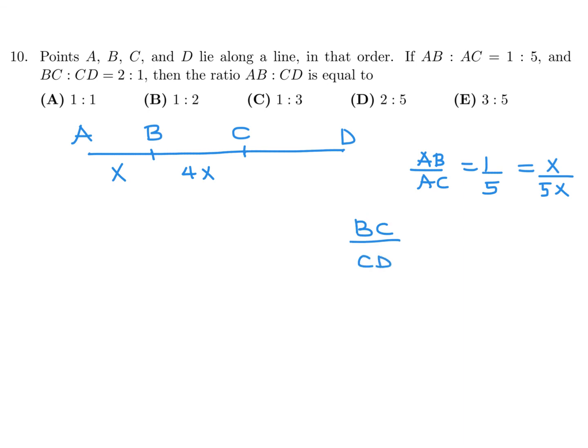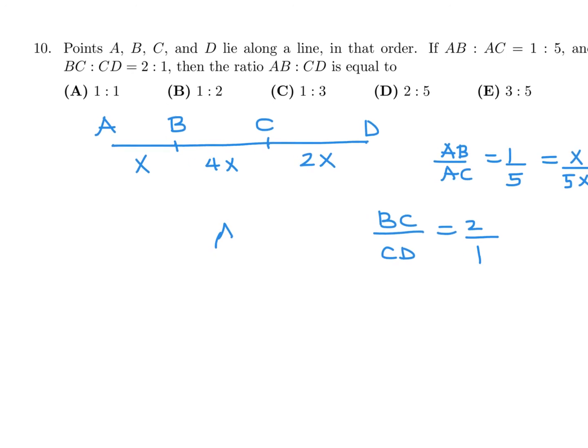CD is half of that, so 2 to 1 means CD would be 2x. Therefore AB to CD - AB is x, CD is 2x. When the x's cancel you get 1 to 2, so 1 to 2 is the answer for number 10, which is choice B.